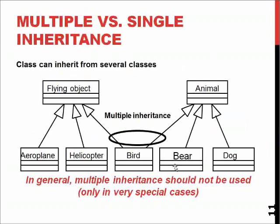You can also have multiple inheritance or multiple generalization. For example, a bird is both a flying object and an animal, so it should have both sets of attributes and methods.